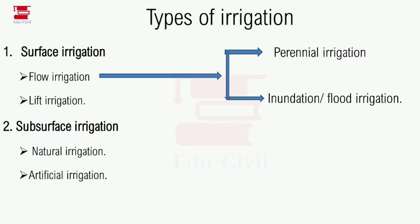Now, types of irrigation. There are surface irrigation and subsurface irrigation. Surface irrigation has two types: flow irrigation and lift irrigation. Flow irrigation can further be divided into perennial irrigation and inundation irrigation. Subsurface irrigation is classified as natural and artificial.